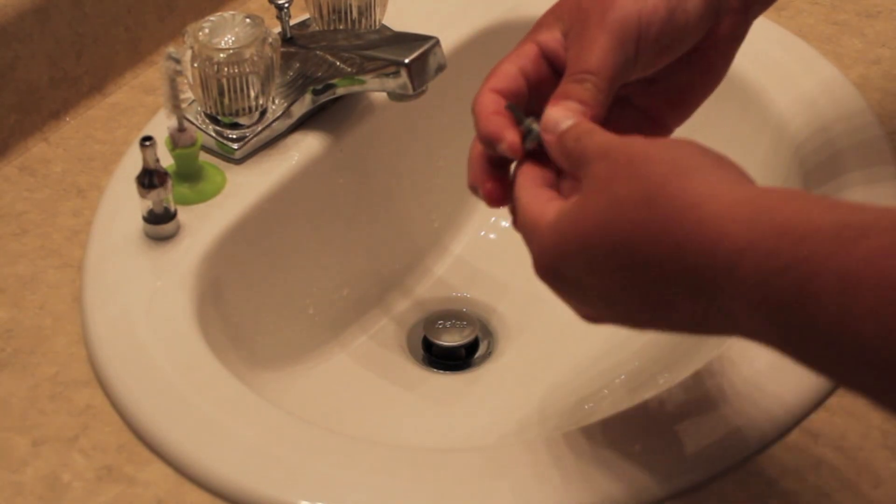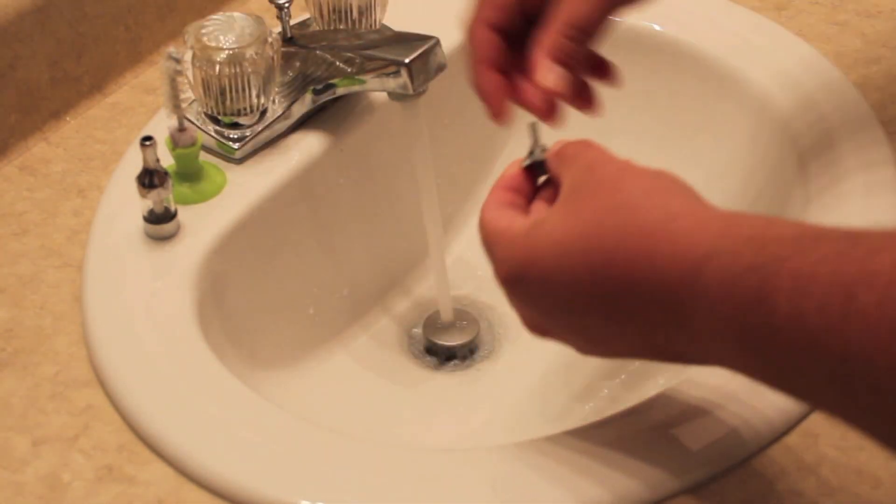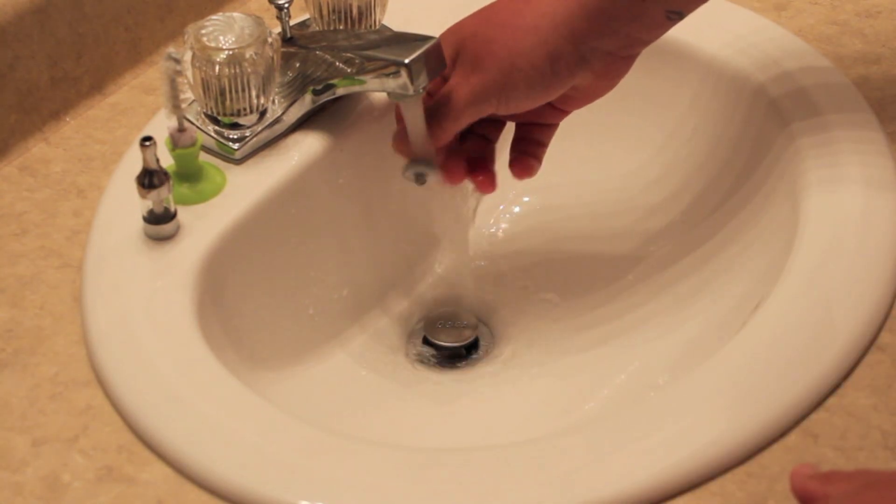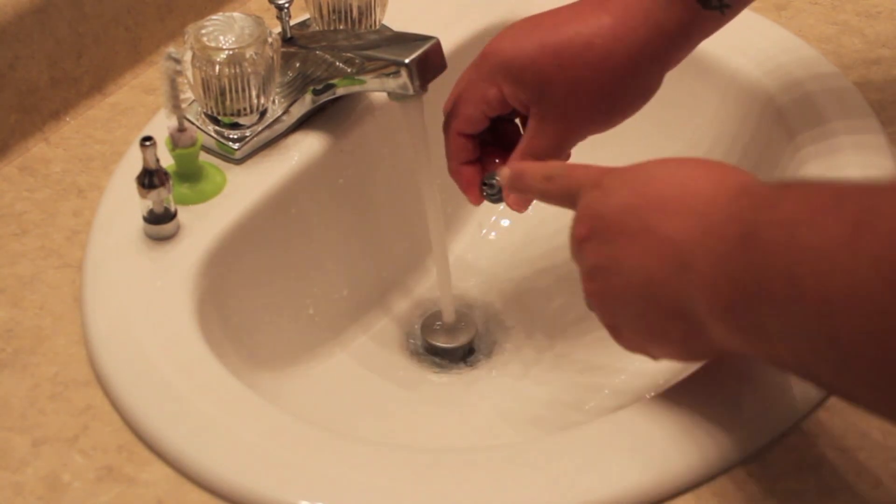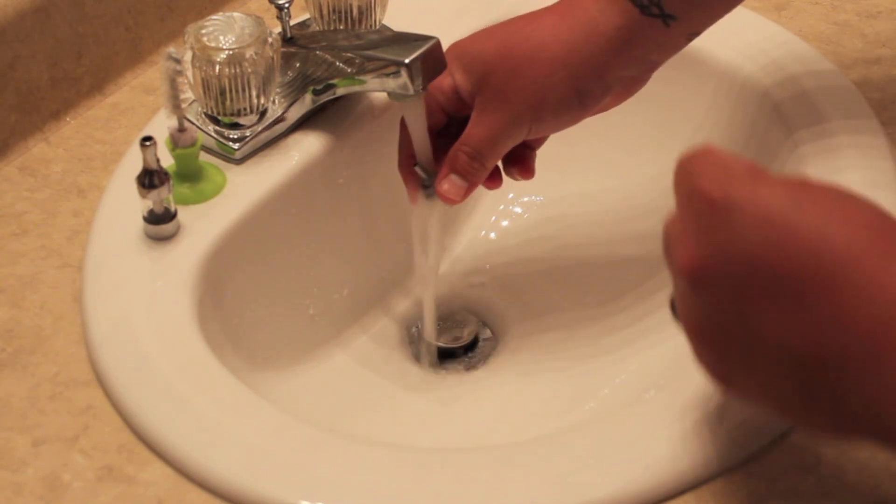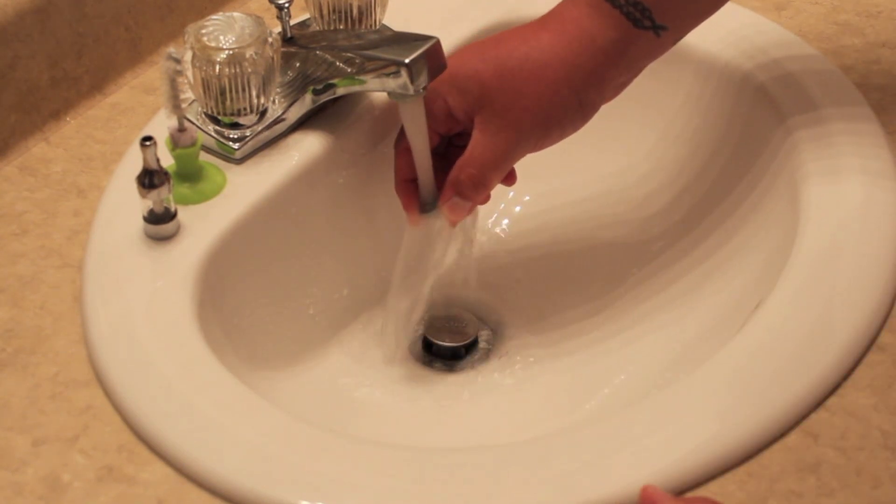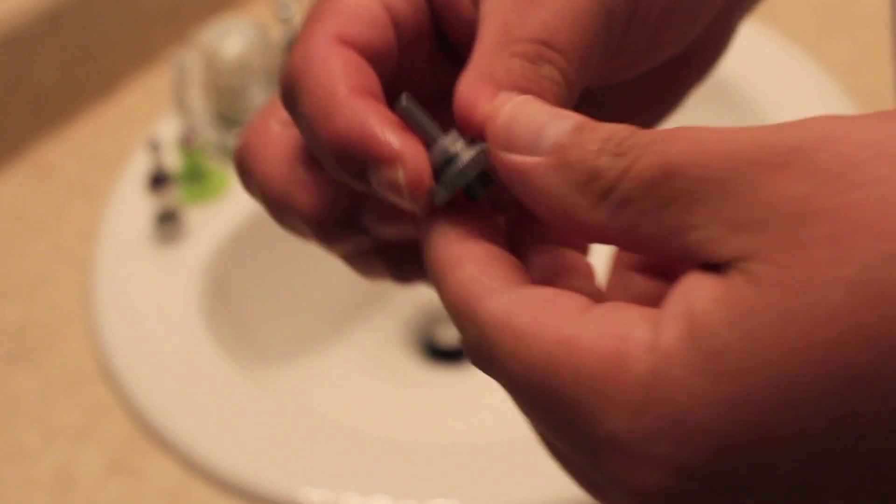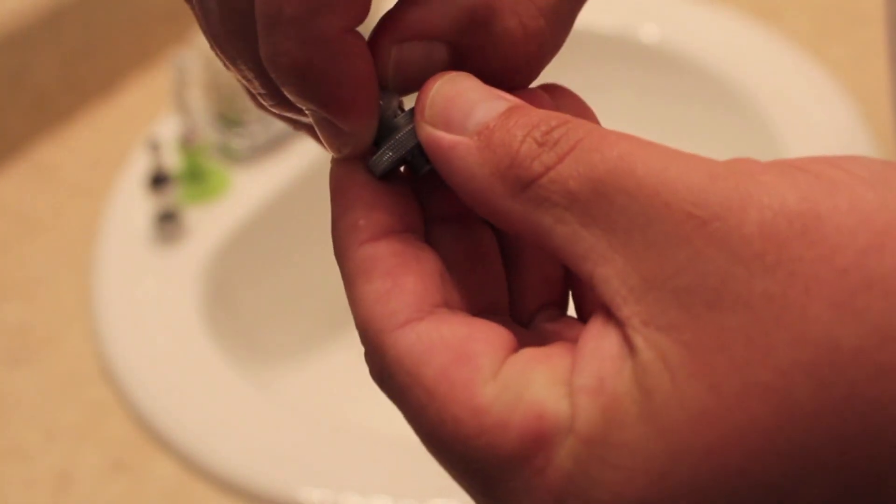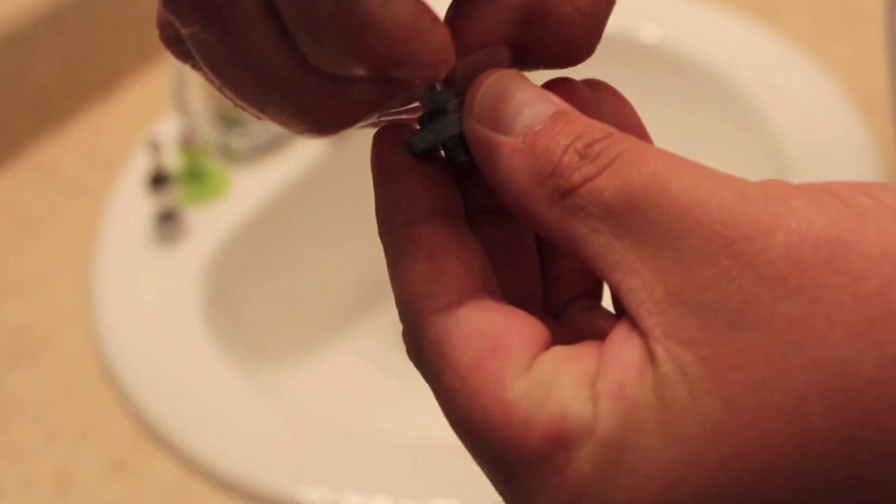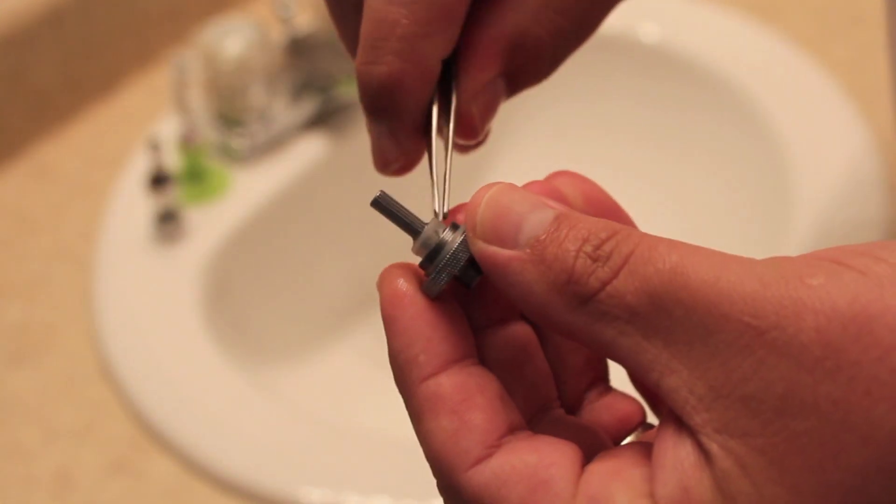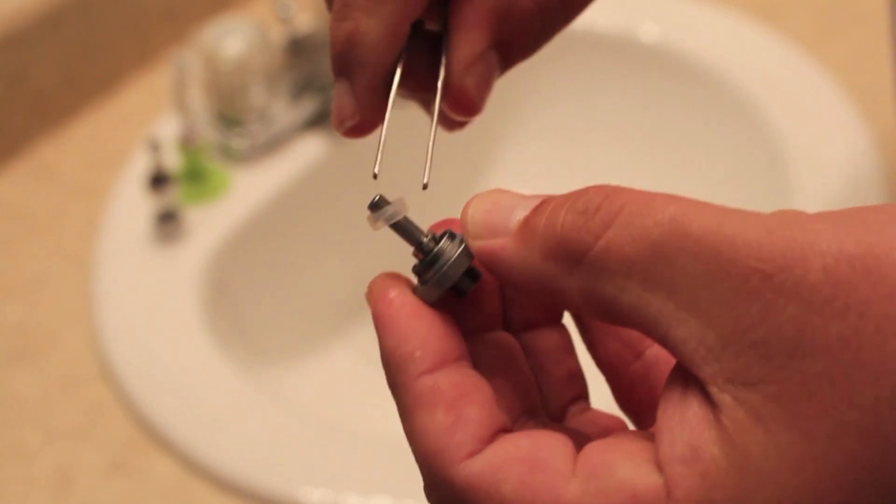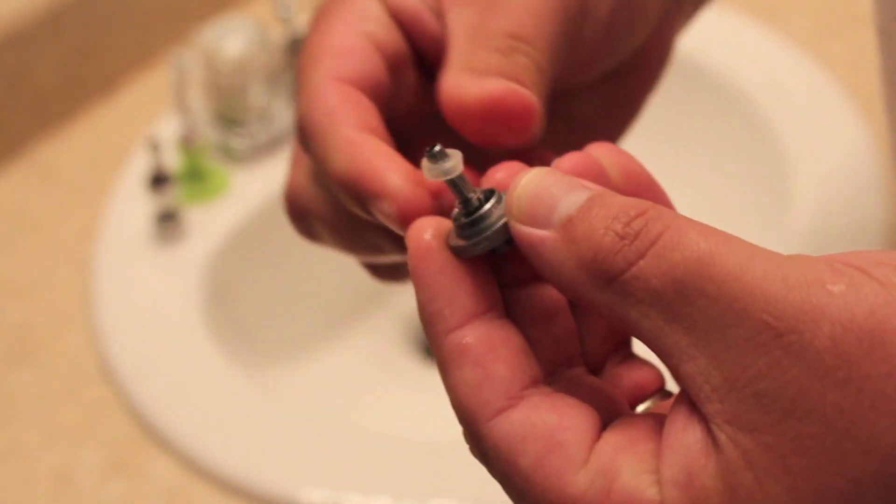Make sure to get down in that center hole there too. Then after you get it rinsed out you want to take the silicone cap right here off. If you need to, get some pliers. My fingers are too big to get in there. Pull that silicone cap off.